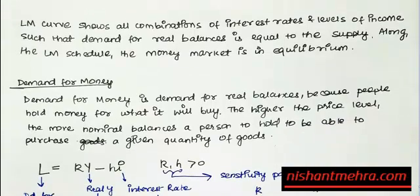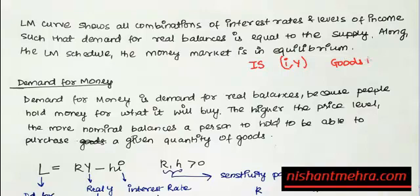What is an LM curve? The IS curve is the combination of interest rate and output at which the goods market is in equilibrium, while the LM curve is the combination of interest rate and output at which the money market is in equilibrium. So the IS curve is the combination of I and Y for goods market equilibrium, while the LM curve is the combination of I and Y for money market equilibrium.